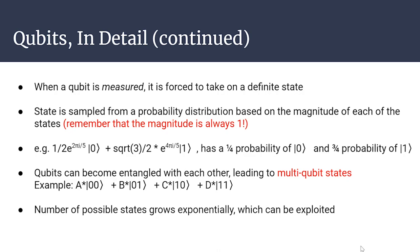When we measure a qubit, it forces the qubit — or multi-qubit combination if entangled — to take on a definite state. It samples from a probability distribution based on the relative magnitude of each state. Since the magnitude is always 1, the squared magnitudes are the probabilities, and they add up to 1. Using our example: (1/2)·e^(2πi/5)|0⟩ + (√3/2)·e^(4πi/5)|1⟩ gives a 1/4 probability of measuring 0 and a 3/4 probability of measuring 1.